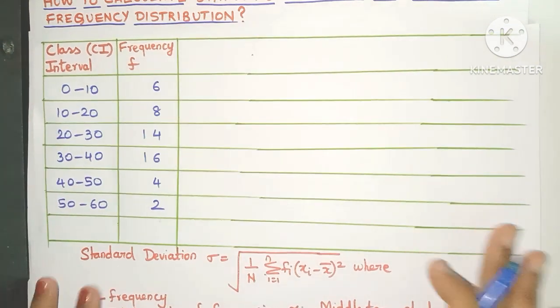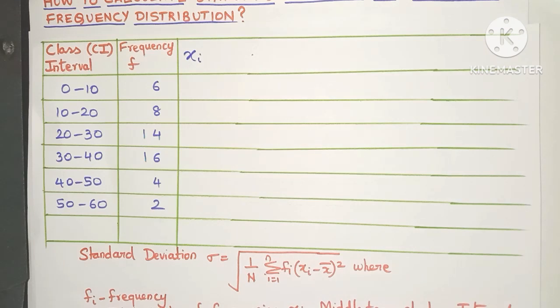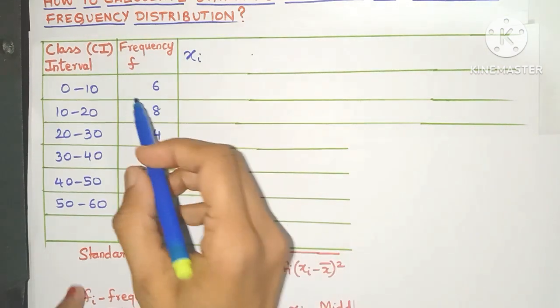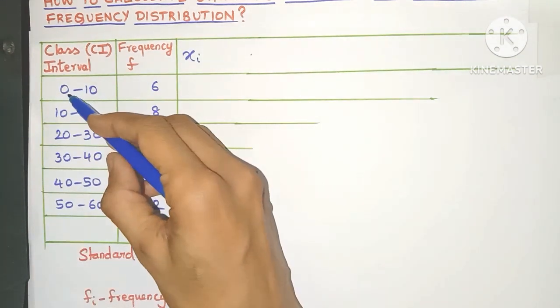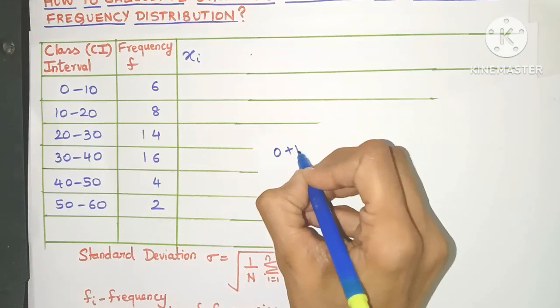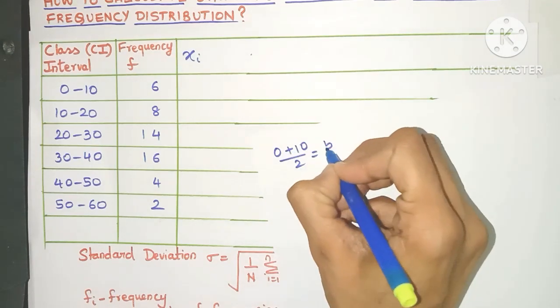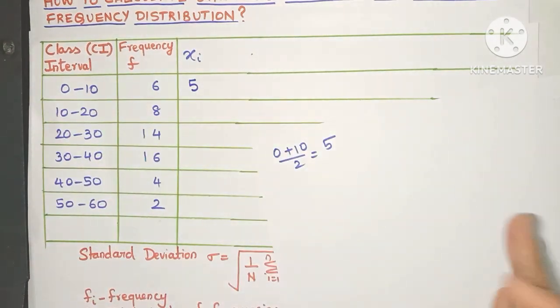Now this is the formula for standard deviation, but before we can use this we need to find certain values. So for that let's create a new column known as the xi column. Now what is this xi? It is nothing but the middle term of each class interval. So how do you find that? You just need to add the upper limit and lower limit and divide it by 2.